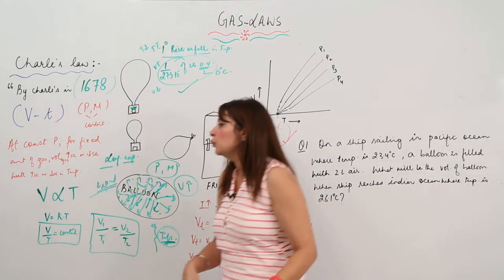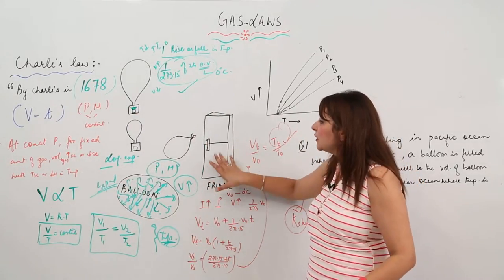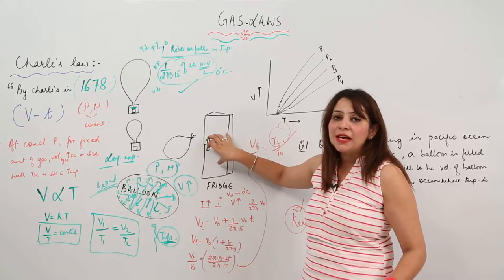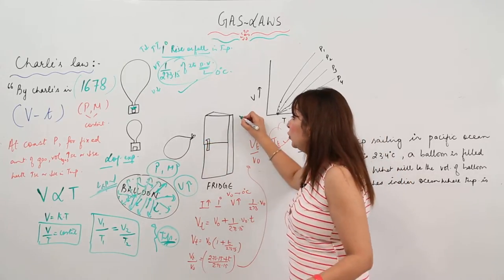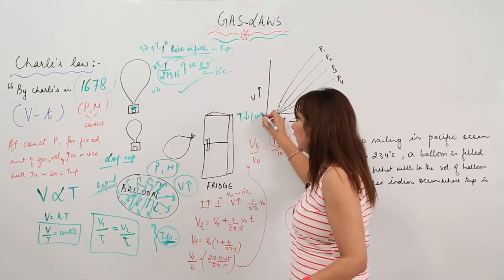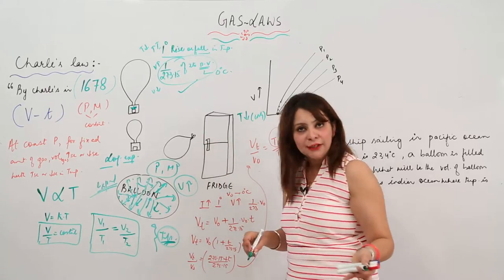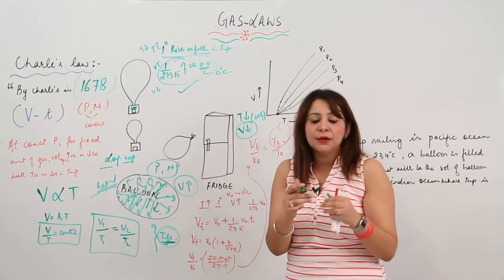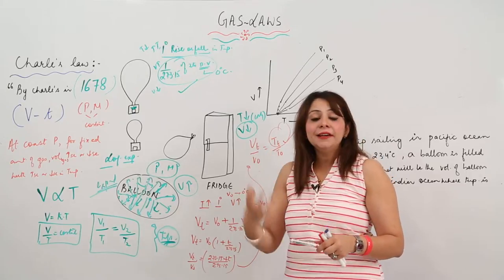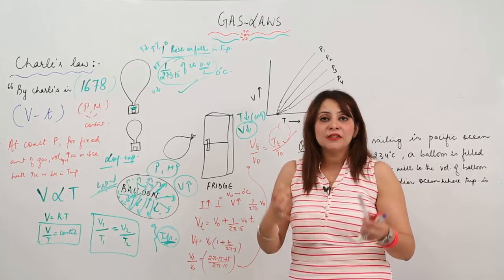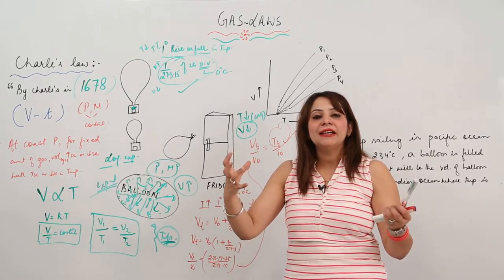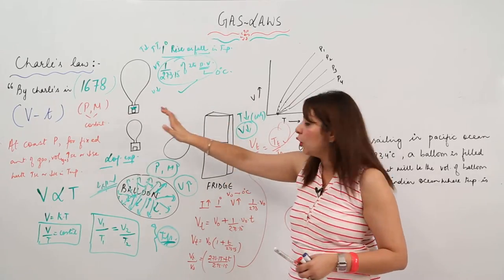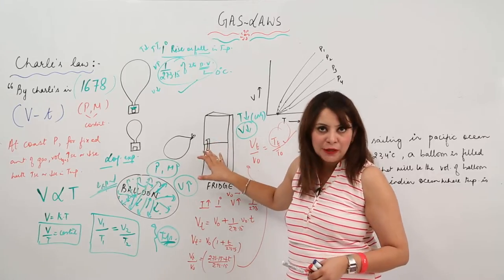To confirm Charles's Law with a daily routine experiment: take a filled balloon and place it inside a fridge. After some time, take it out. In the fridge the temperature is low due to cooling effect. You will observe that the volume of the balloon decreases, because decreasing temperature reduces the kinetic energy of the air molecules inside and they contract. This is based on Charles's Law.